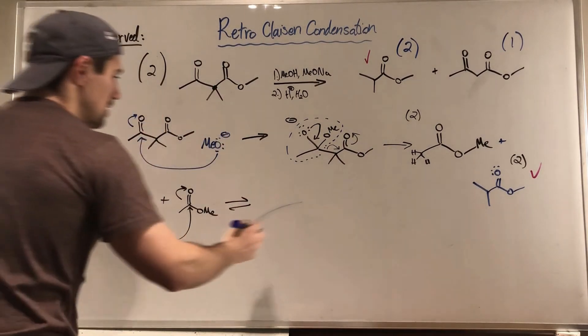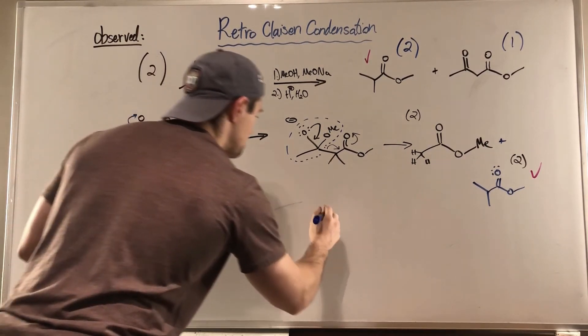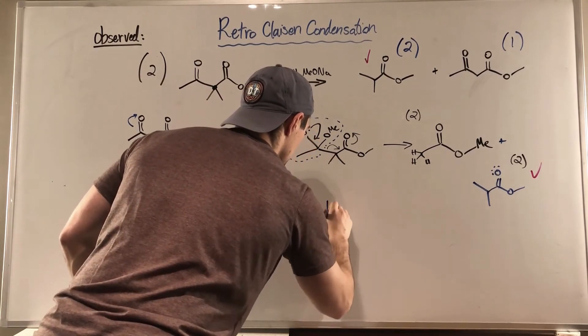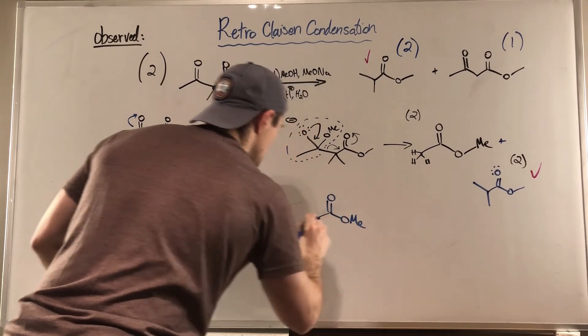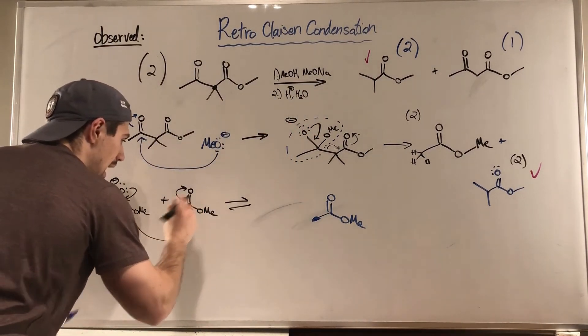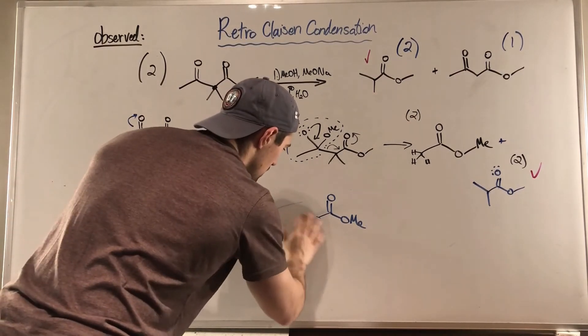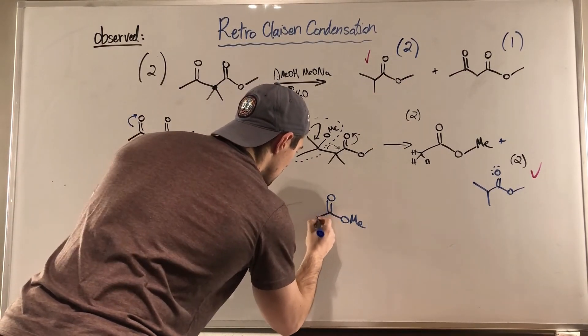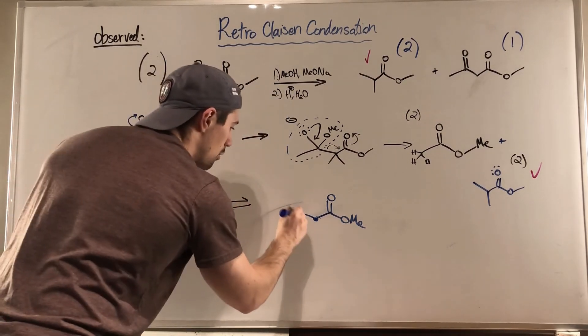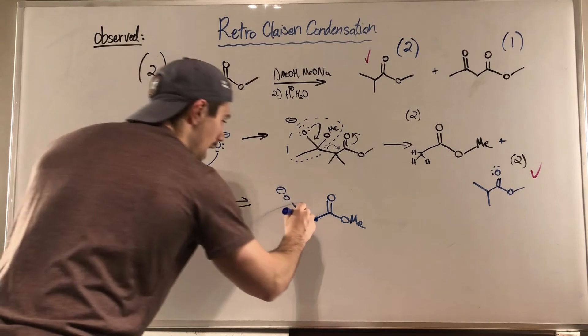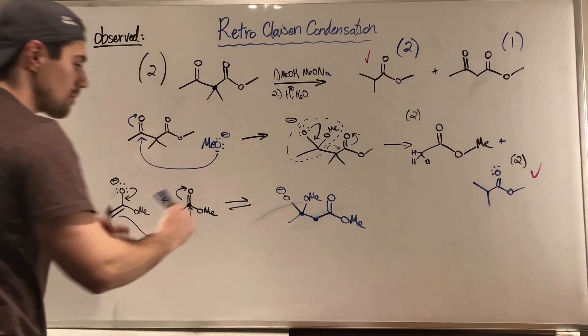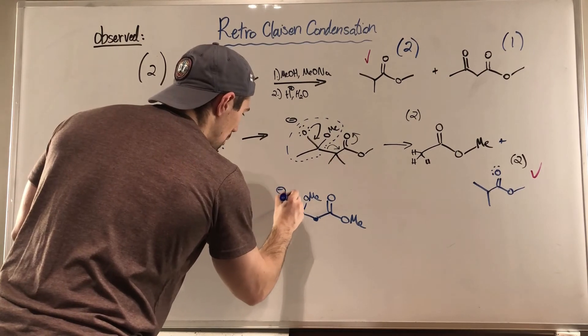So I'm going to go ahead and draw this. I always give myself a little bit more room. Not that. OME. This is my dot carbon. And I know I just bonded to that other dot carbon. Make this a little cleaner. On the dot carbon, I have an O minus. I have an OME sticking up. And a methyl group. The tetrahedral intermediate will collapse. We'll eject our not so great leaving group.